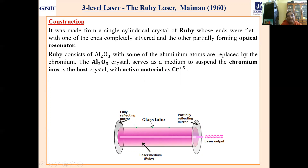Ruby basically consists of aluminium oxide crystal where some of the aluminium atoms are replaced by chromium. Aluminium is trivalent and chromium is also trivalent. The aluminium oxide crystal serves as the host crystal to suspend the chromium ions, and chromium is the active material. Ruby is nothing but aluminium oxide crystal with few aluminium atoms replaced by trivalent chromium.